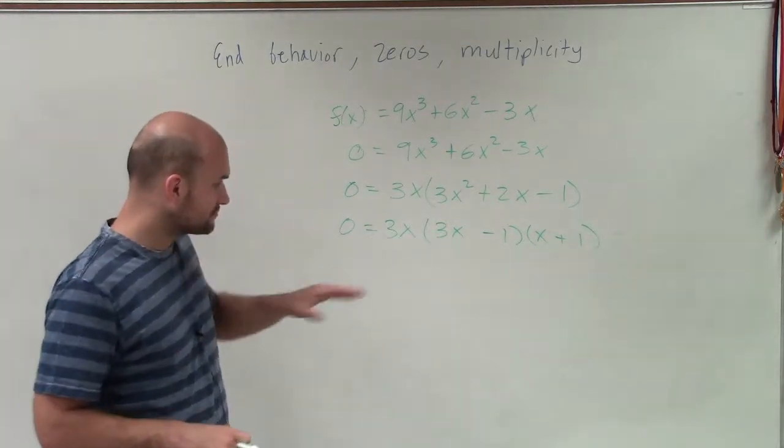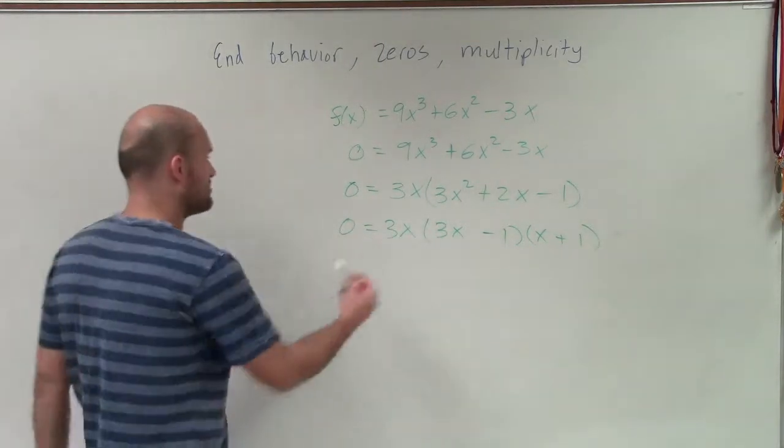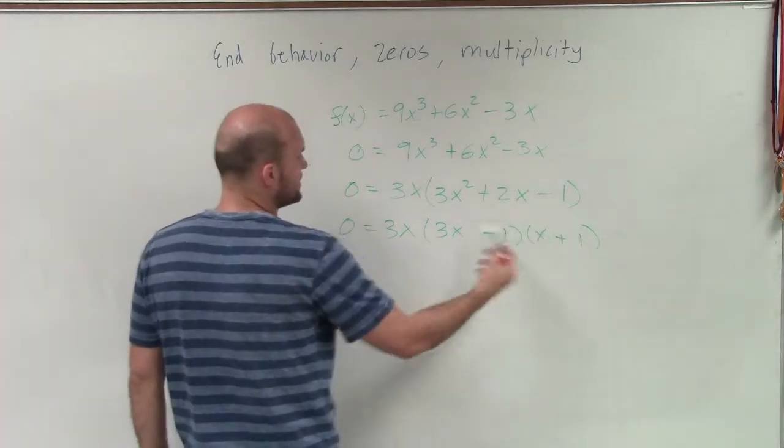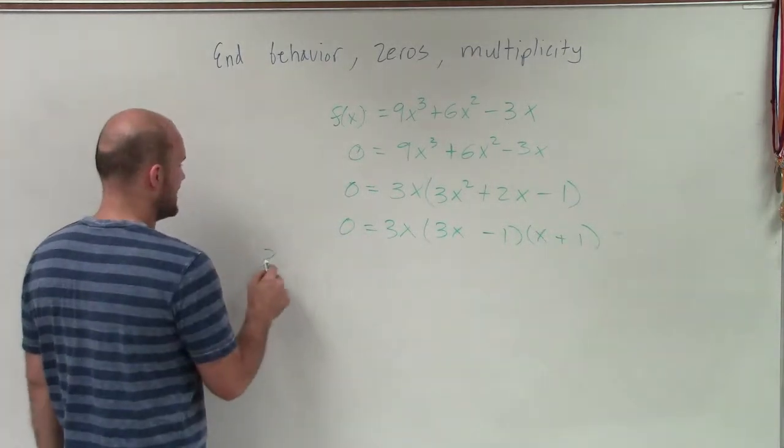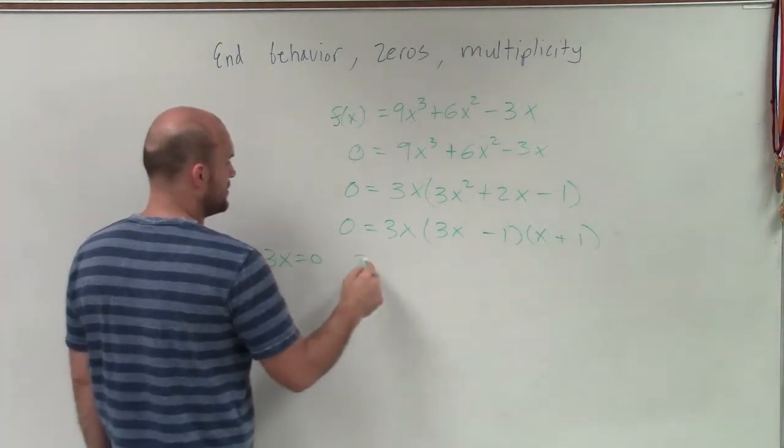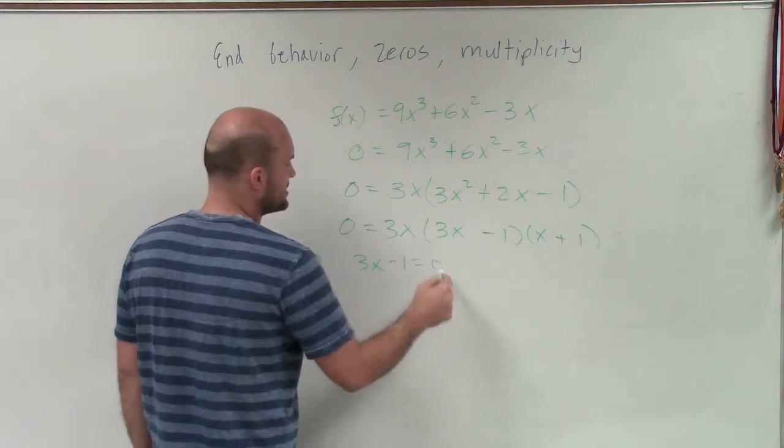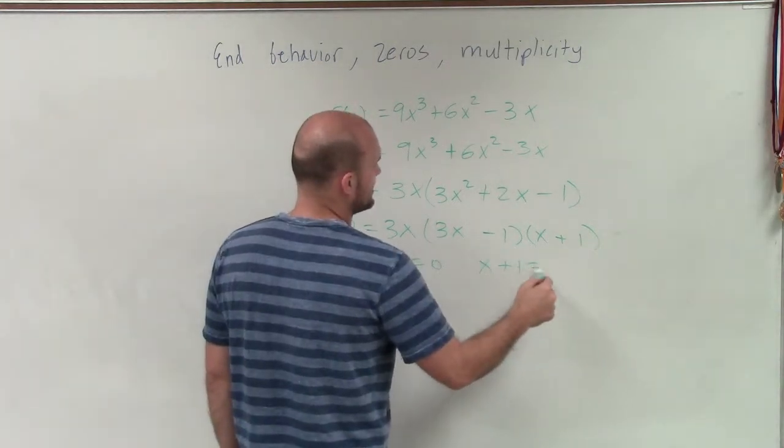Now what I can do is apply the zero product property. Since I'm multiplying each one of these factors that give me 0, I can now say that 3x equals 0, or 3x minus 1 equals 0, or x plus 1 equals 0.